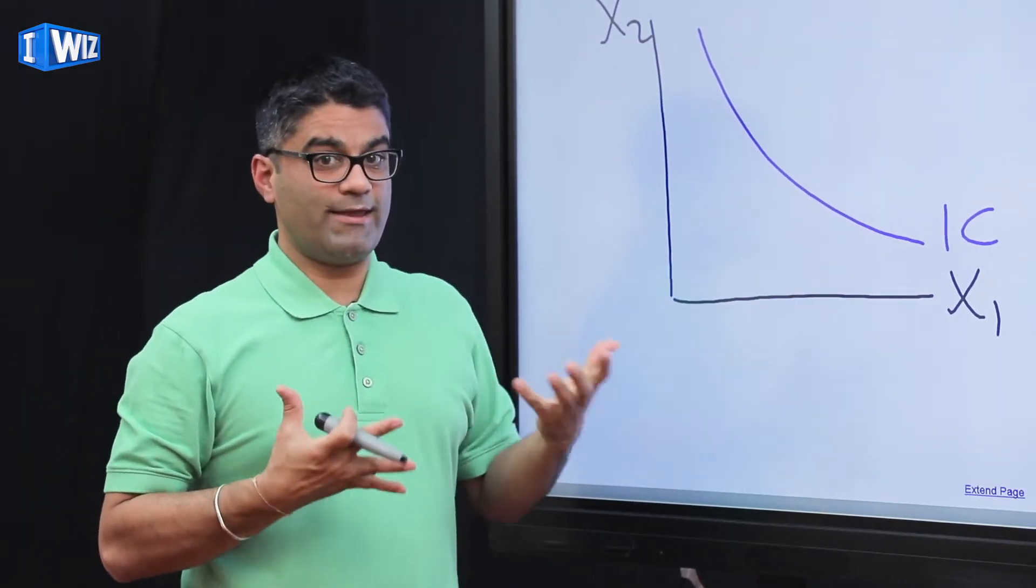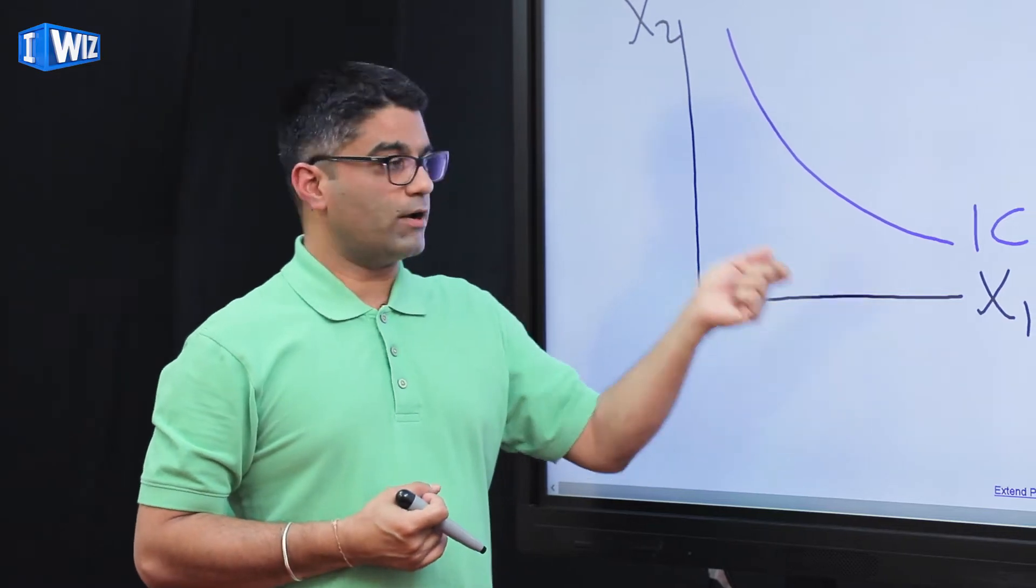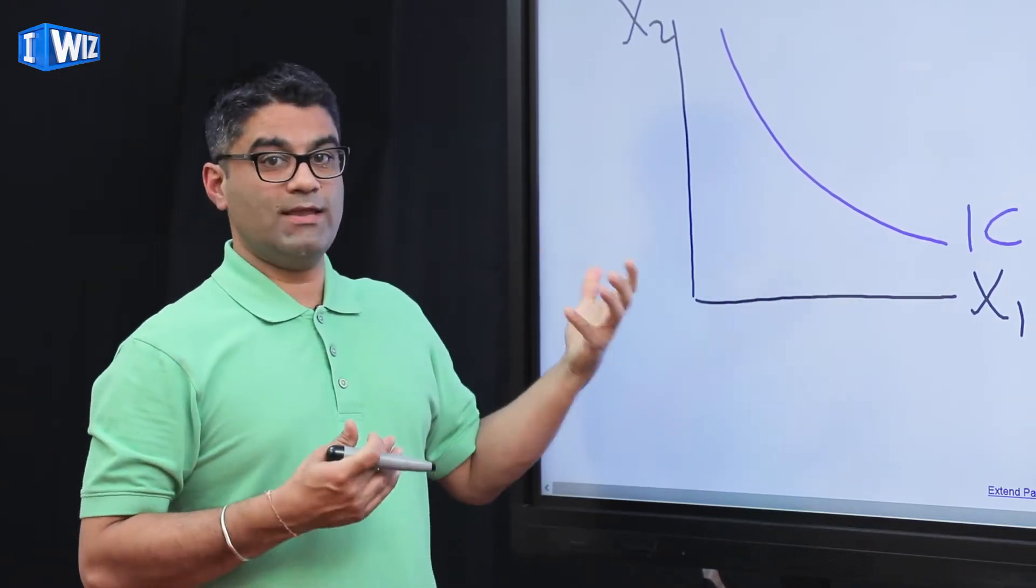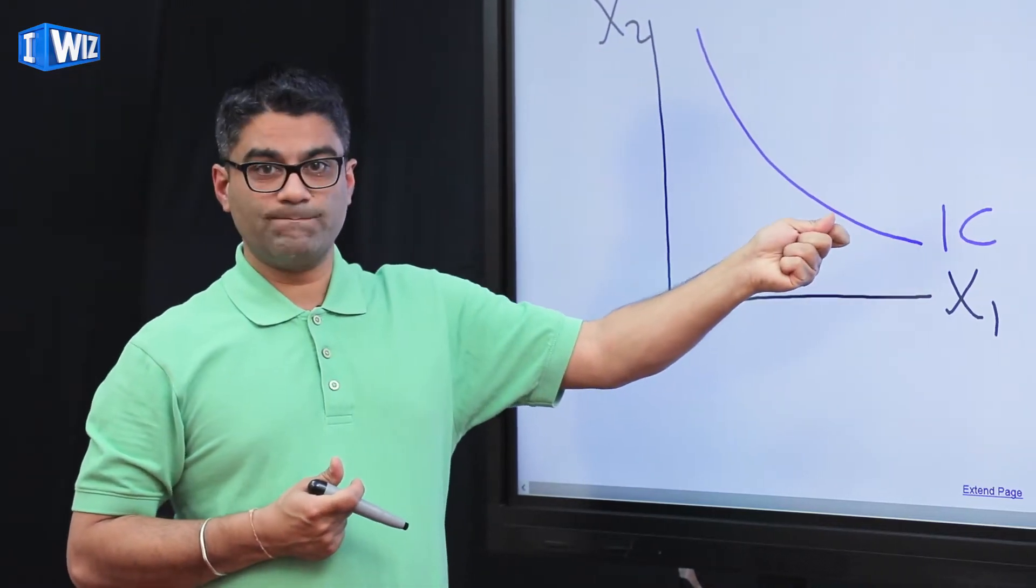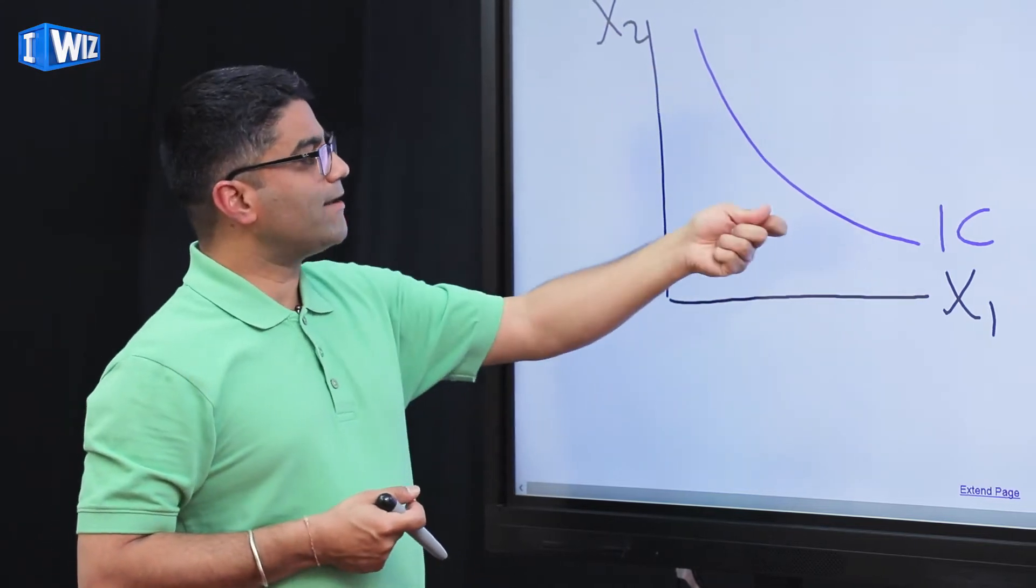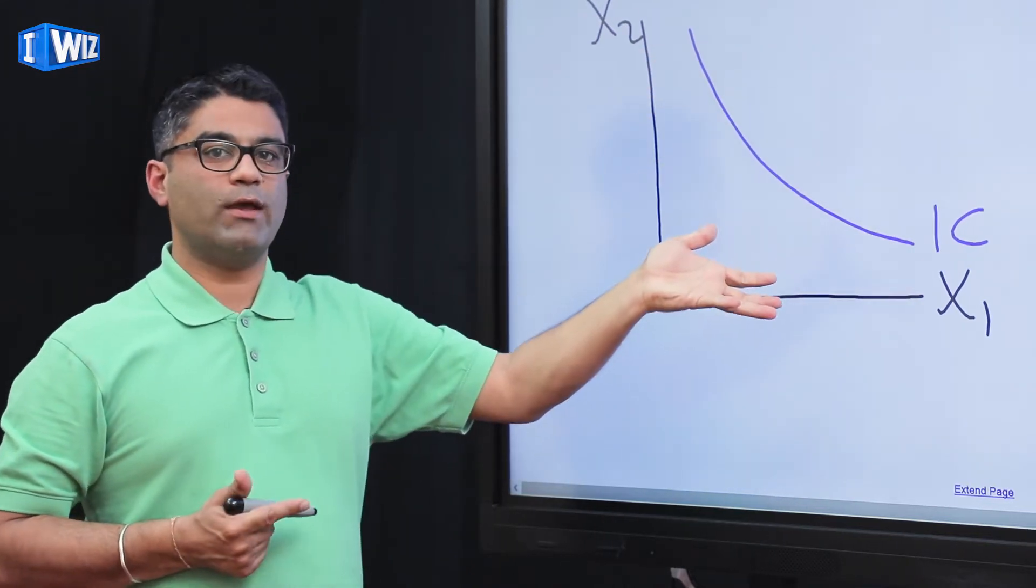Because every point on this line leaves me equally happy, which means if I get more of x1, I have to give up x2 to be equally happy. Therefore it's downward sloping. This next question is, why does it look the way it does? Why is it curved the way it is?